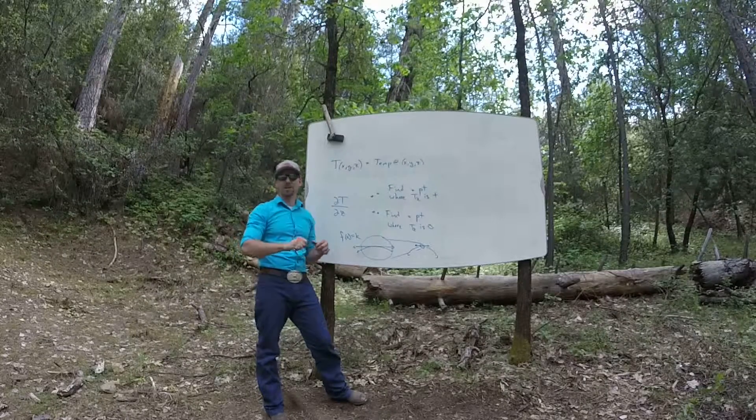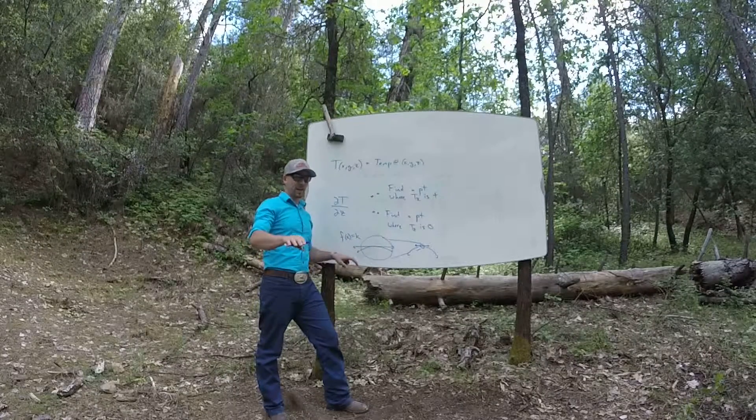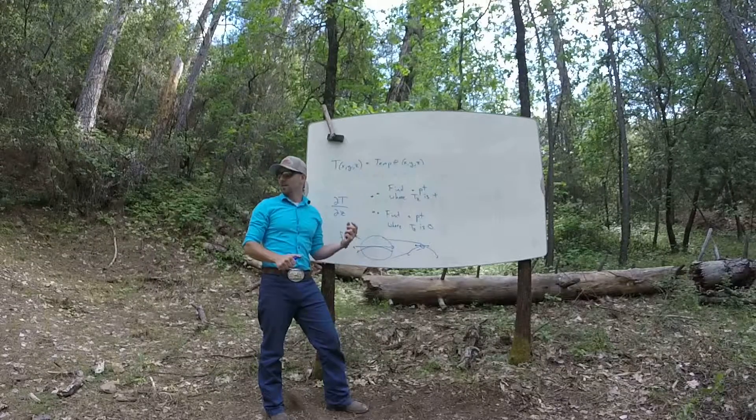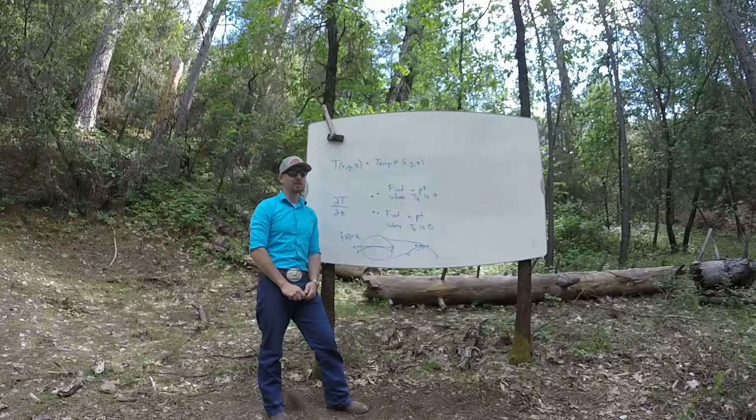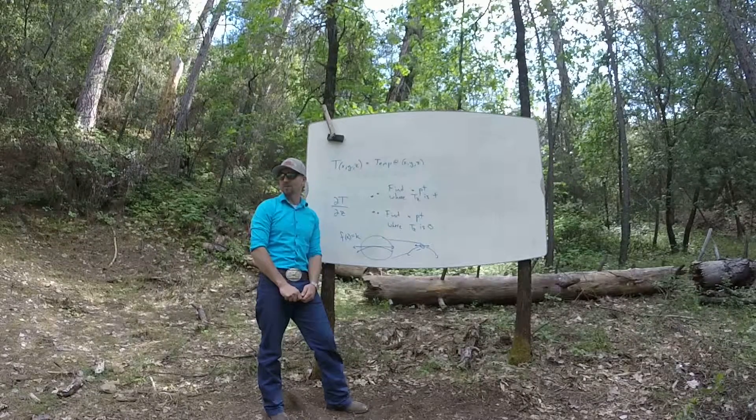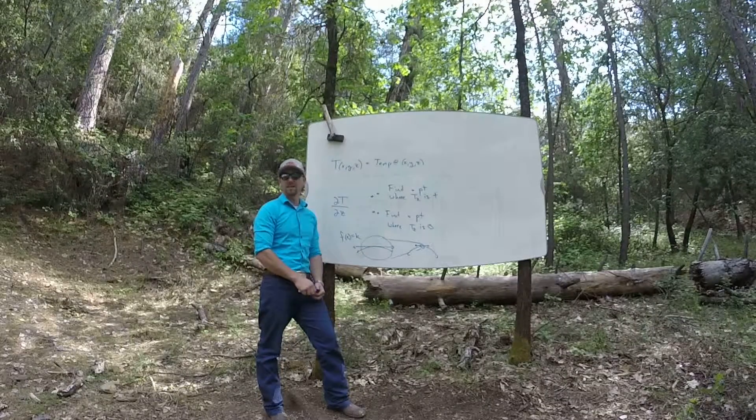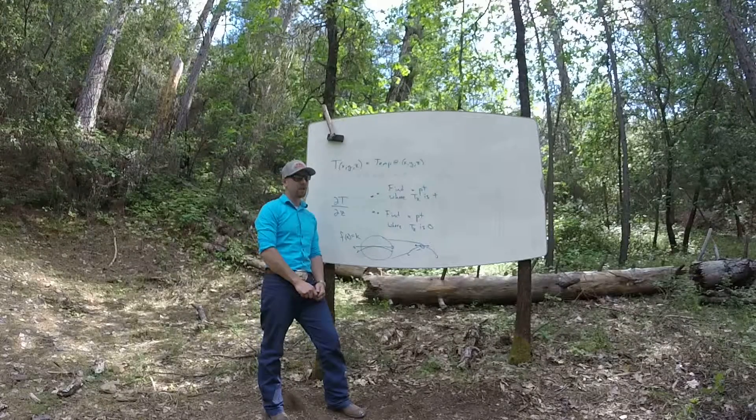So remember the difference between constant and locally constant is constants, like, everywhere it's flat, right? Locally constant means if you were standing at that spot and zoomed in close enough, it would seem as though it was flat. It doesn't actually have to be. So maxes, mins, saddles, all of those are locally flat, but not necessarily globally flat at all.